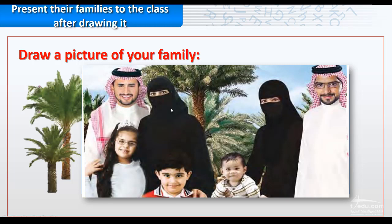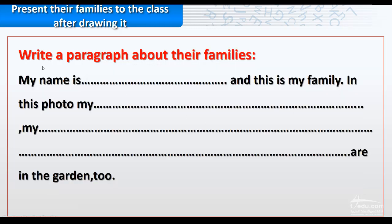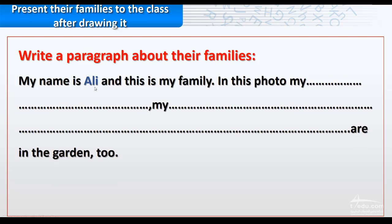Father, mother, sister, brother, uncle Karim, aunt Rima, and cousin Saud — they are in the garden, as you can see. Now we'll write a paragraph about their families. We'll talk about Ali's family.